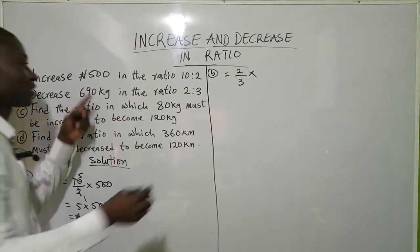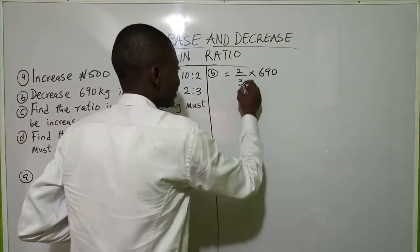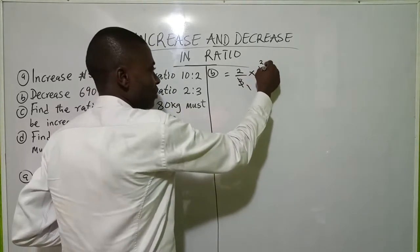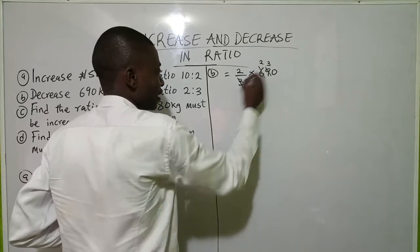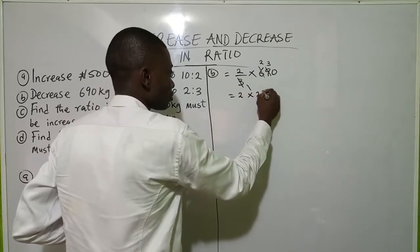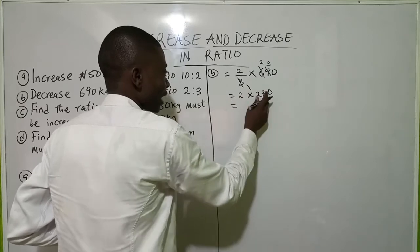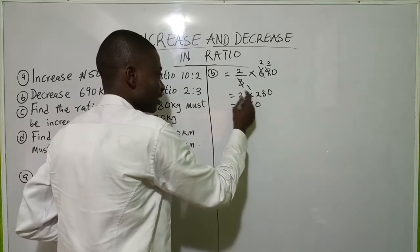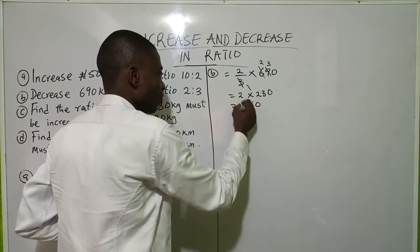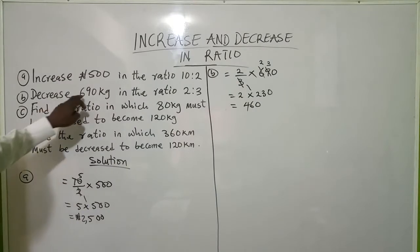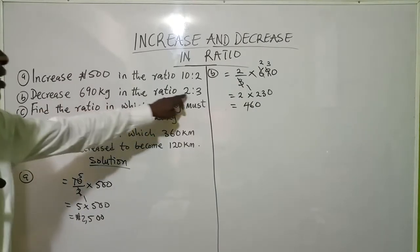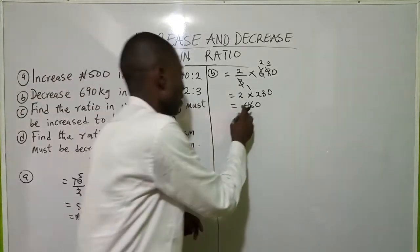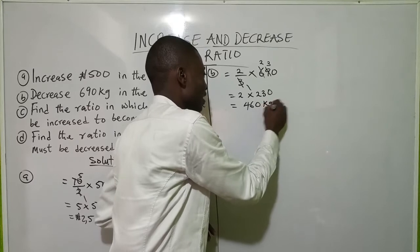Whatever we are decreasing — that is 690. Now 3 can go into 690: 3 goes into 6 twice, 3 goes into 9 three times, and 3 goes into 0 zero times — giving us 2, 3, 0. So 2 times 0 is 0, 2 times 3 is 6, 2 times 2 is 4. So I have succeeded in decreasing 690 kg in this ratio. When we decrease 690 kg in ratio 2:3, our answer is 460 kg.